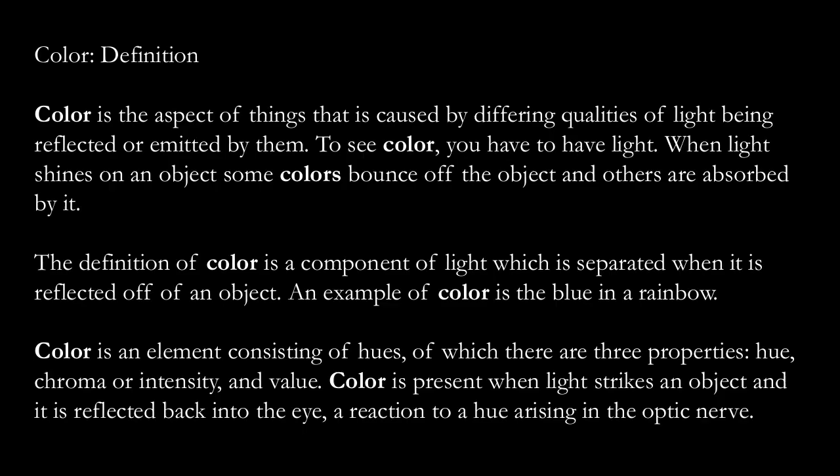The first thing we want to do is just have a little conversation about what color is. I've got a little bit of lengthy stuff here. I'll go ahead and read a little bit for you, and then we'll kind of get into it. Color is the aspect of things that is caused by differing qualities of light being reflected or emanated by them. To see color, you have to have light.